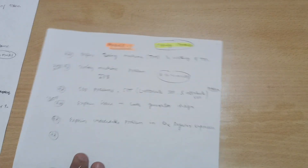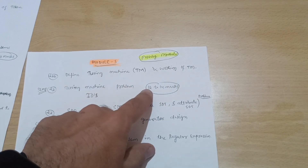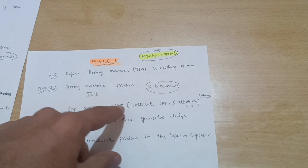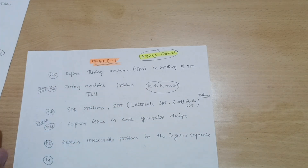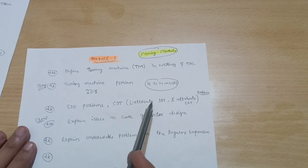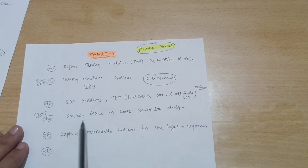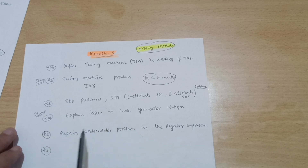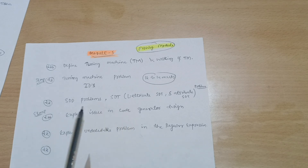Module 5 is also a passing module. Define Turing Machine (TM) and explain the working of TM — the Turing Machine problem may be a 12 to 14 mark question. You can also refer to the 18-scheme paper, subject code 18CS54, where you can find problems on Turing Machines. Next are SDD and SDT problems, which include L-attribute SDT and S-attribute SDT. Explain issues in code generator design — this is a super important question. Also explain undecidable problems in regular expressions.